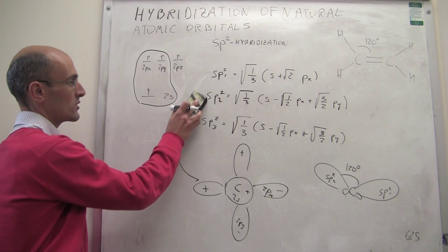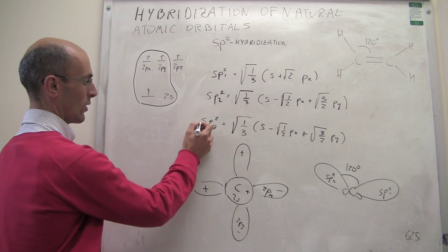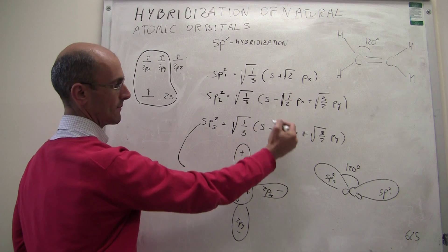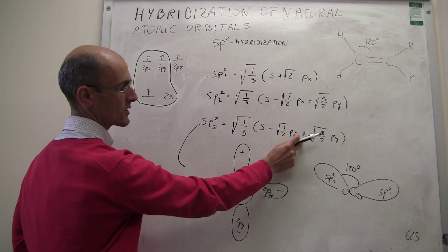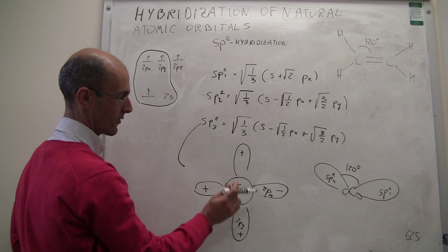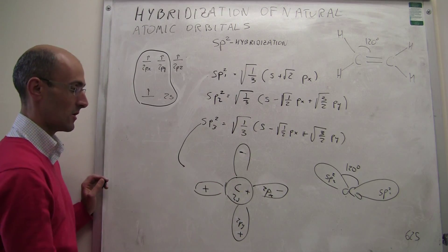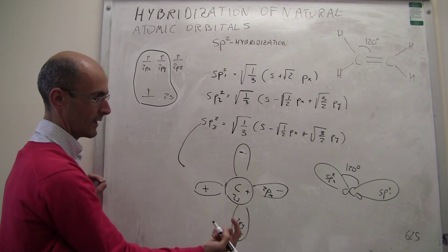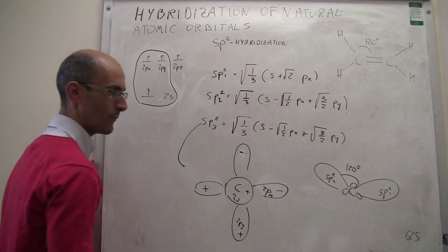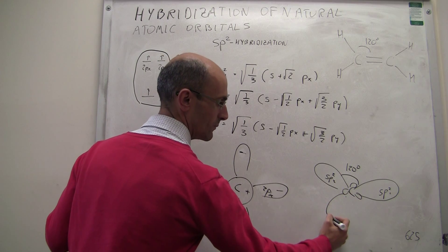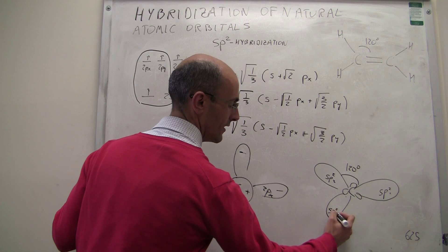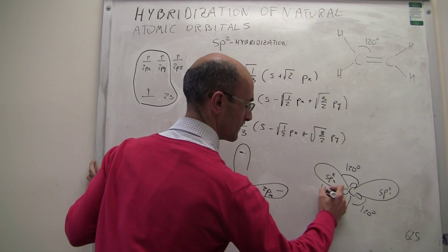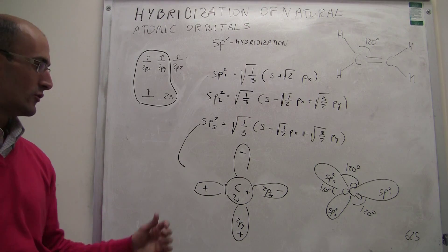Using the same reasoning, we can see how the third sp2 hybrid orbital should look. The only difference from the second is that the py now has a negative sign, so the only change is flipping the sign of that orbital. The resulting orbital points in a direction below the axis. All of these angles are going to be 120 degrees — those are your three sp2 hybrid orbitals.